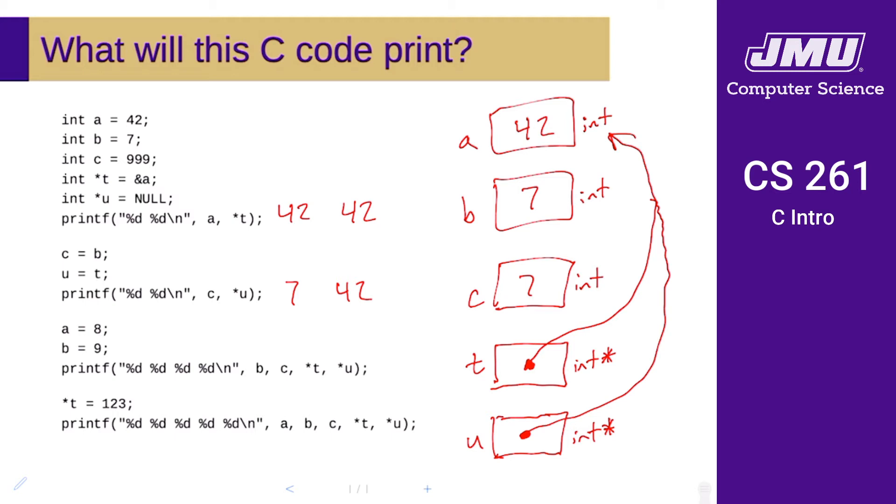In these lines here, this is going to set a to eight, so that's basically going to change this 42 to an eight. We are going to set b to nine, so that's going to change this. Note that that does not change c, right? We had copied b into c here, but that doesn't make c a pointer to anything. That just means that c has the old value of b, and now we've assigned a new value for b.